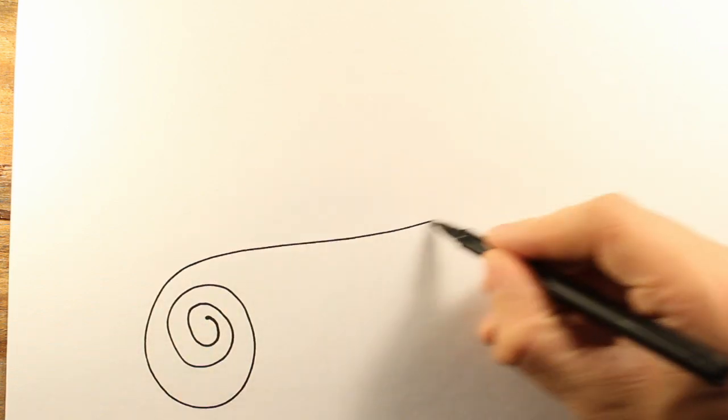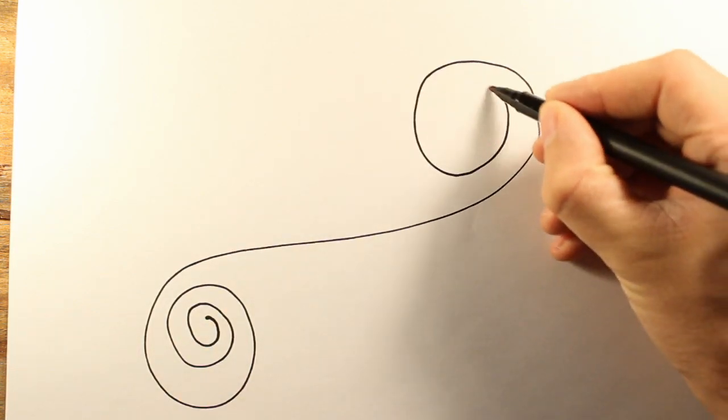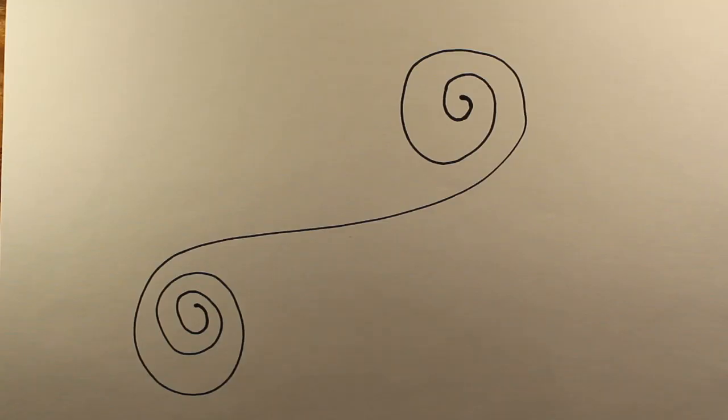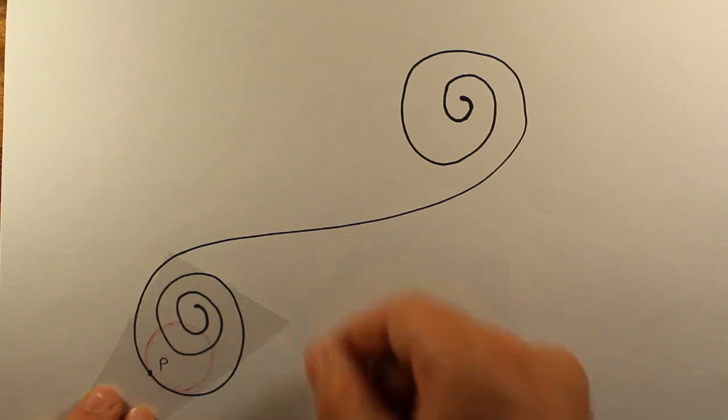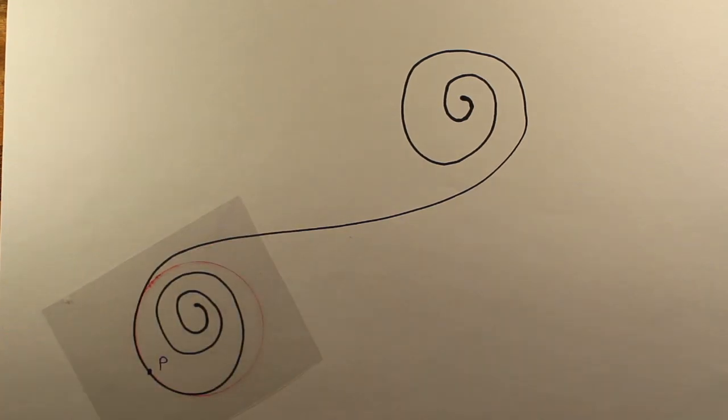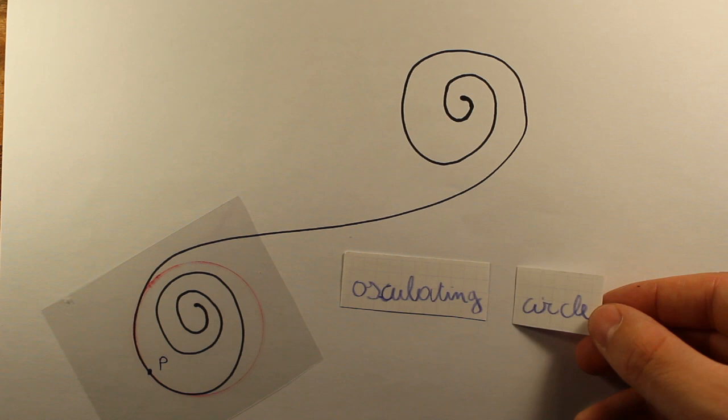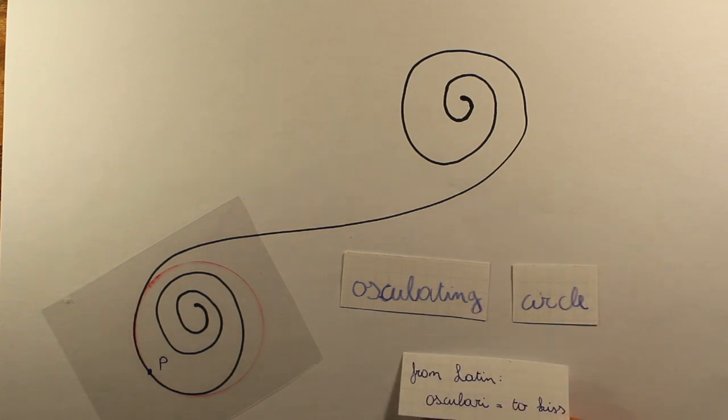However, it only works for circles. How can we extend it to a more general curve, like this spiral? If we're only looking at a small portion of a spiral, it almost looks like a circle. So if we fix a point on it, we can find a unique circle that almost perfectly matches the curve in this point. Indeed, all other circles are either too large or too small. This special circle deserves its own name. It's called the osculating or kissing circle, and it has the same curvature as the spiral.